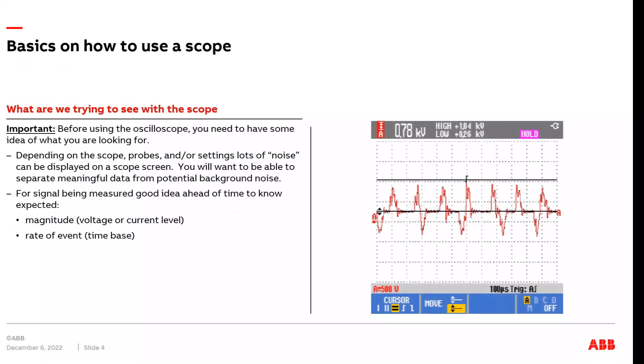Before using a scope to take measurements, it's very important that we understand what type of signal are we trying to analyze and what should that signal look like on the scope. It's very easy depending on the scope itself, the probes that are being used, or even settings on the scope for noise to be induced onto the waveform of the image that we're looking at on the scope screen. And if you don't have the scope set up correctly or know what the signal should look like, it's very easy for noise to look like real events and for you to possibly come to the wrong conclusion of there being issues when in reality there are not. So you want to understand what the magnitude of the signal is, the voltage or current level, and also what should the time rate or time base of that signal be. This will help you make sure that you're using a scope correctly when analyzing signals.